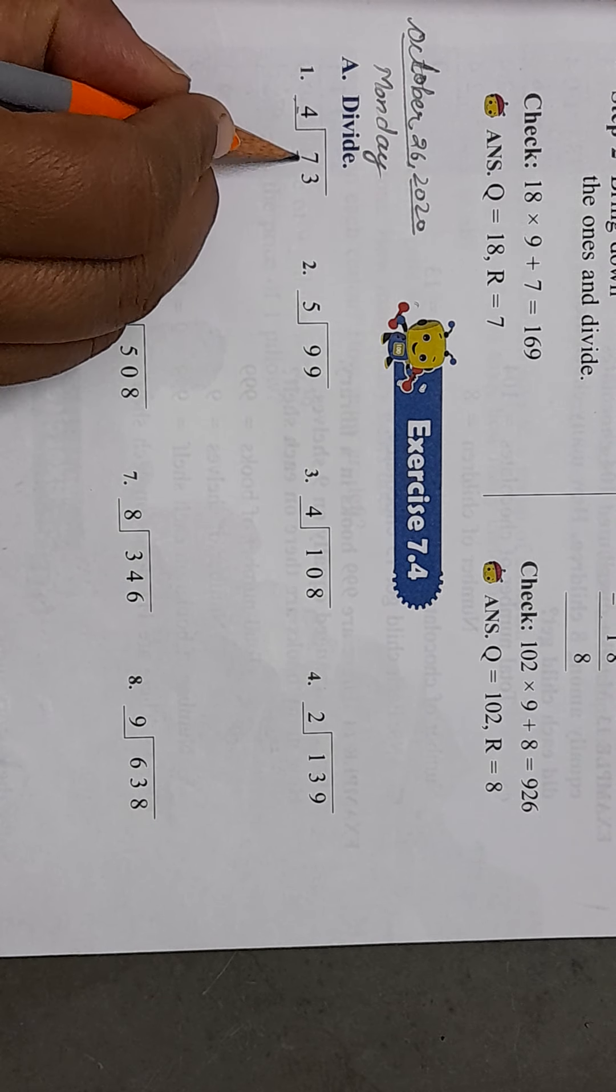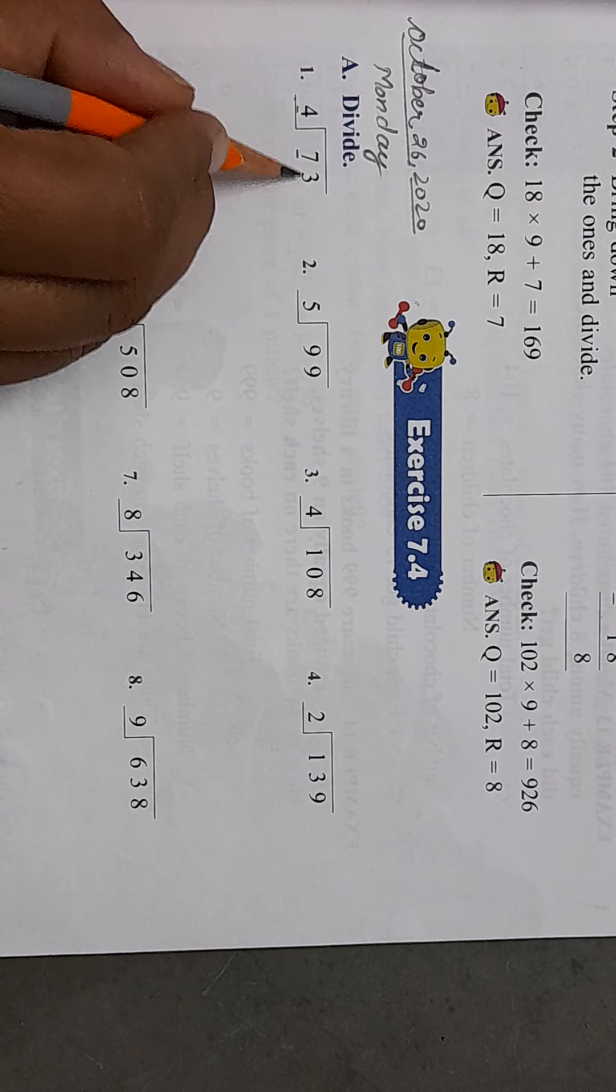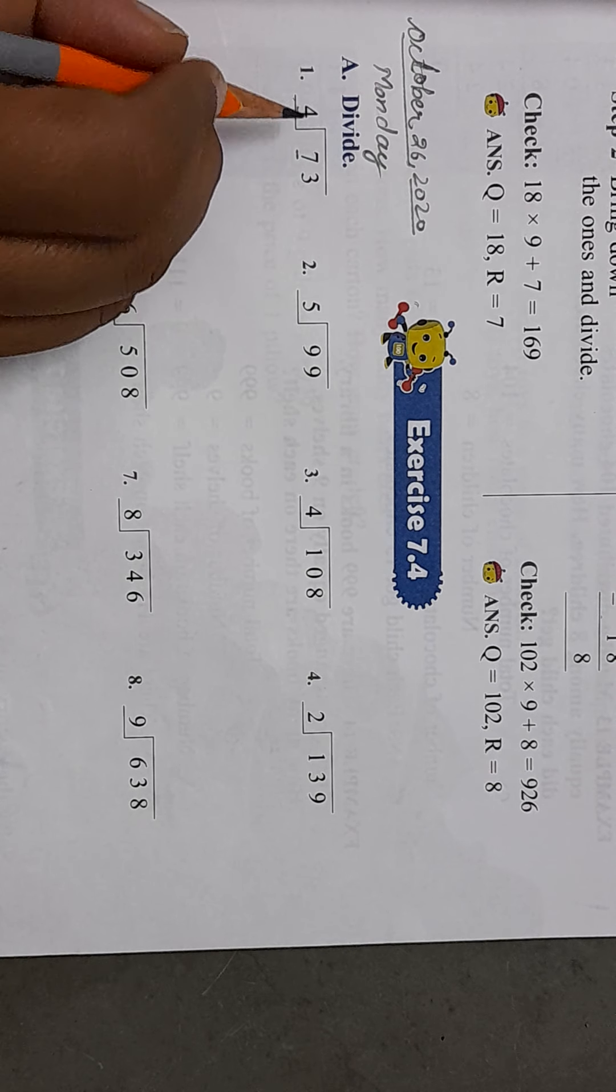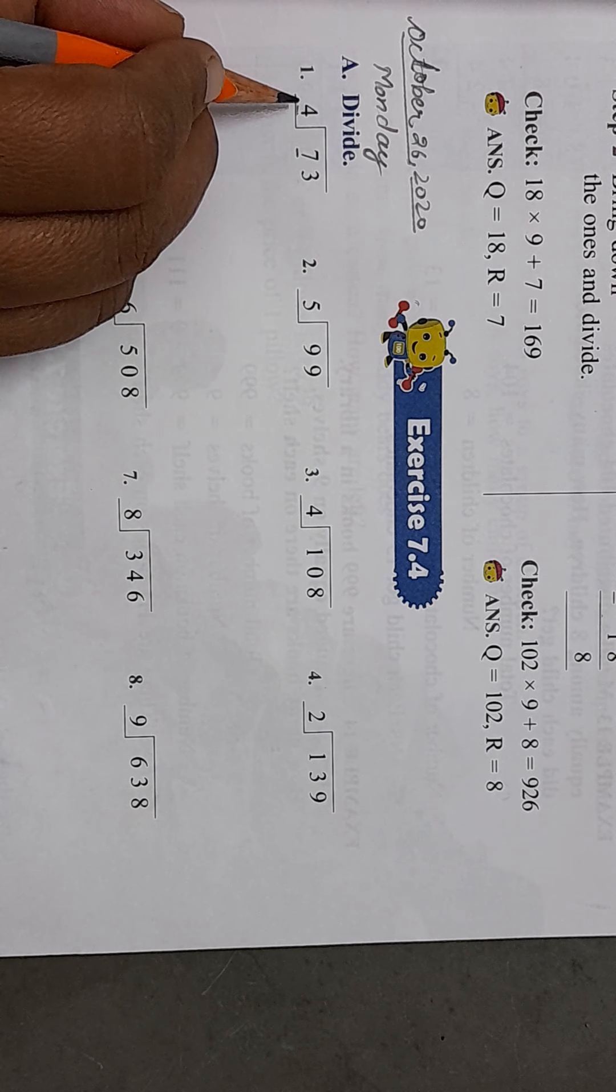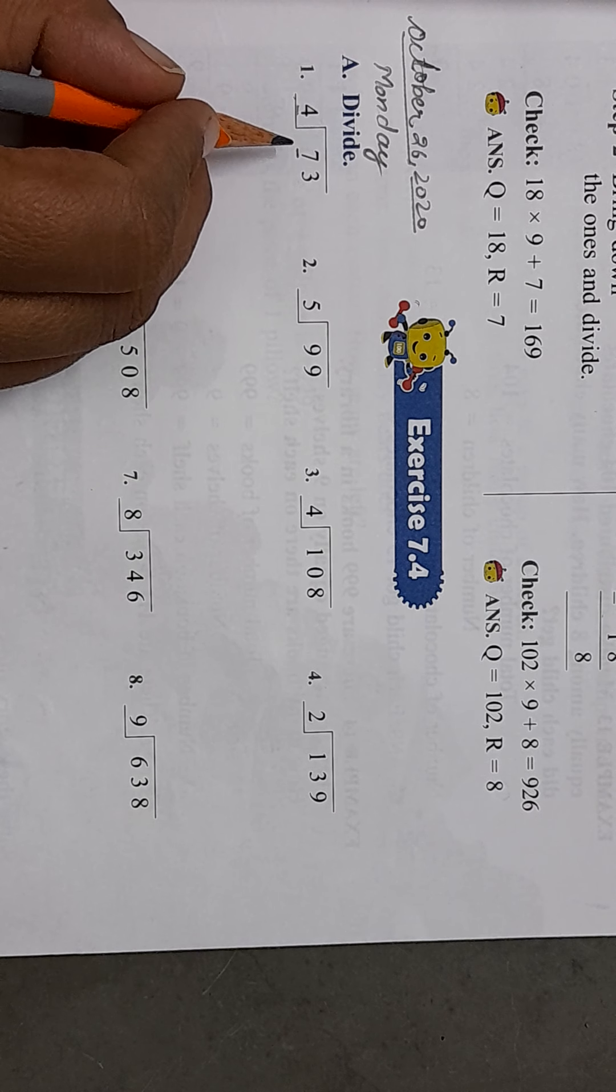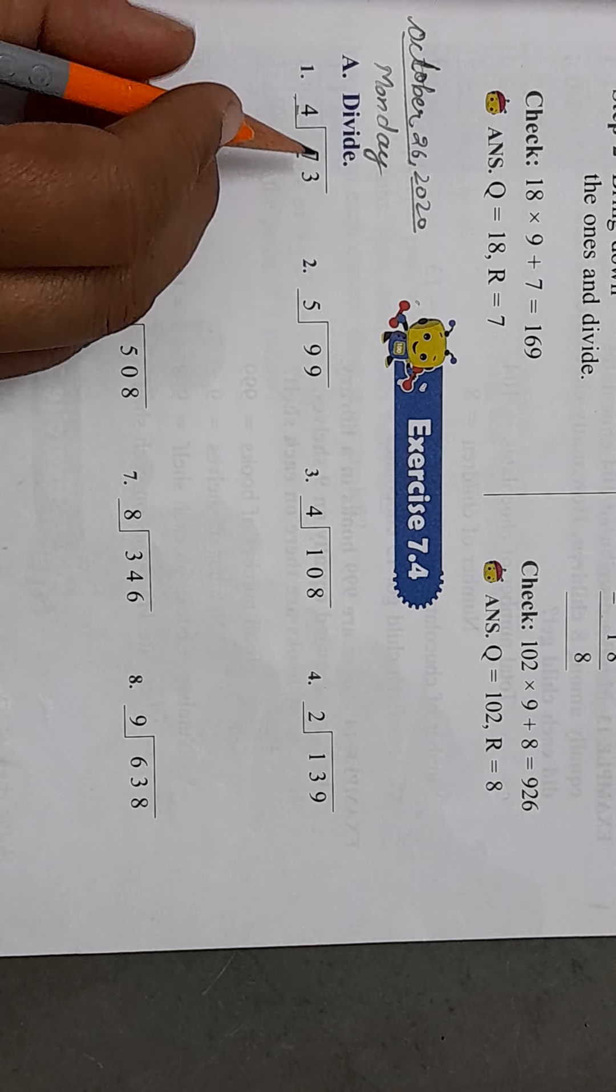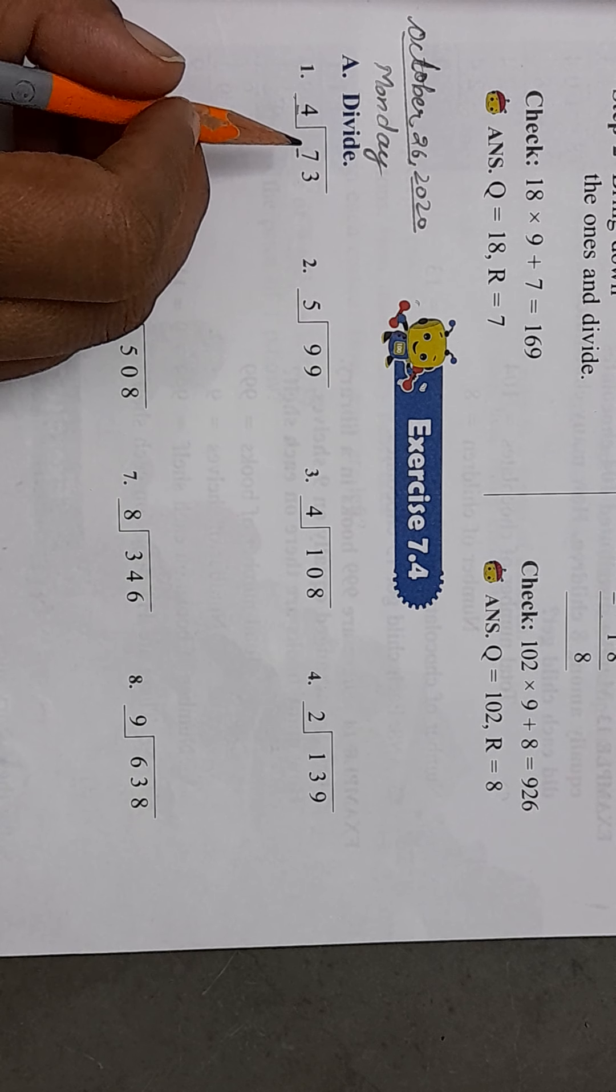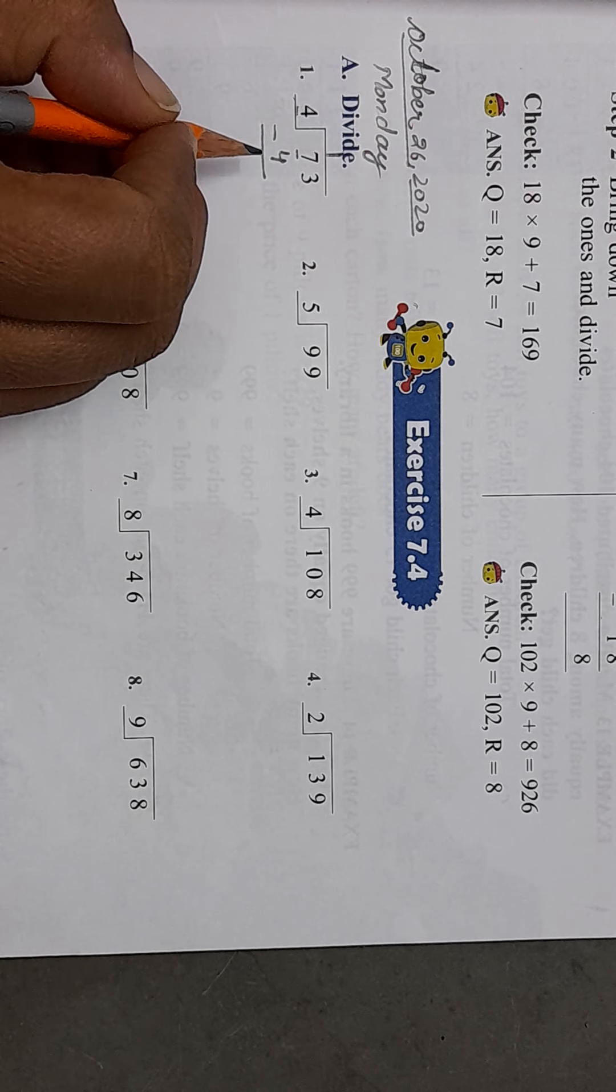So first of all we check the one digit number. If 4 is one digit, we check if 7 is greater than the divisor. It's more than the divisor, so there is no need to take the second number. 7 doesn't come in the table of 4, so we will find that number which is less than 7 but comes in the table of 4. 4 ones are 4, 4 twos are 8. 8 is greater than 7, so we will go with 4 ones. Now we subtract it. 7 minus 4 is 3.